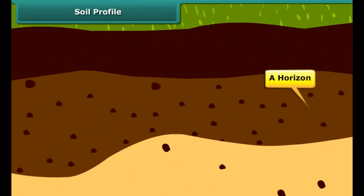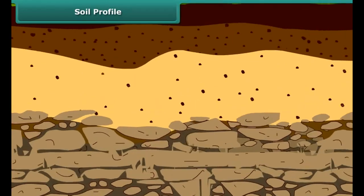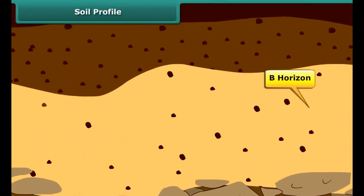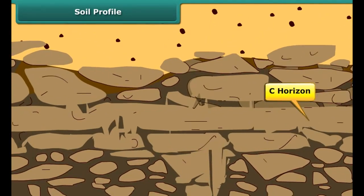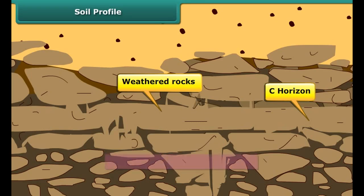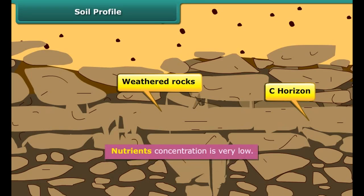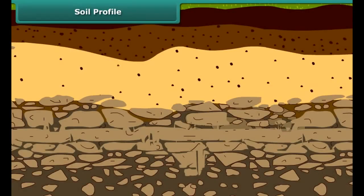The second layer is the A horizon, commonly known as topsoil. This layer has a high concentration of organic material called humus. Many living organisms live in the topsoil. The third layer is the B horizon, commonly known as subsoil. It contains more minerals but less humus. The fourth layer is the C horizon. This layer is rocky and made up of weathered rocks, and nutrients concentration is low in this layer. The final layer is made of solid rocks and commonly known as bedrock.